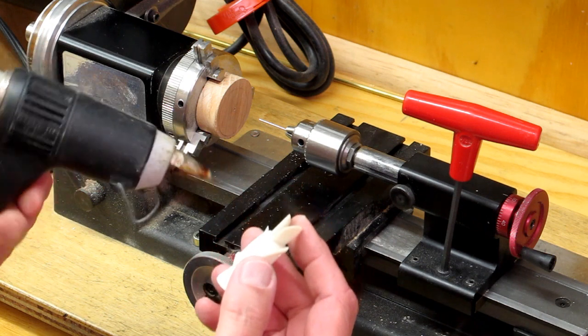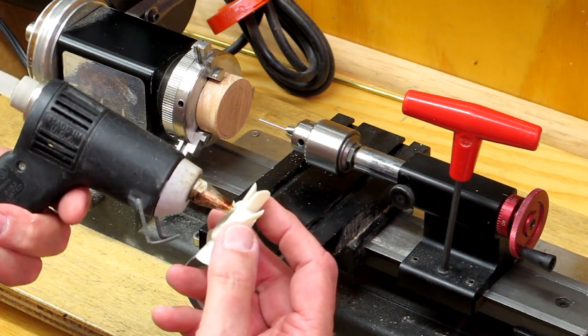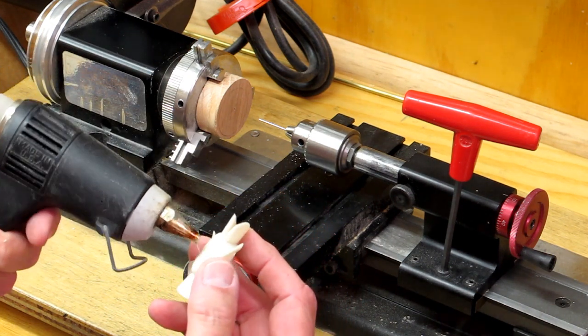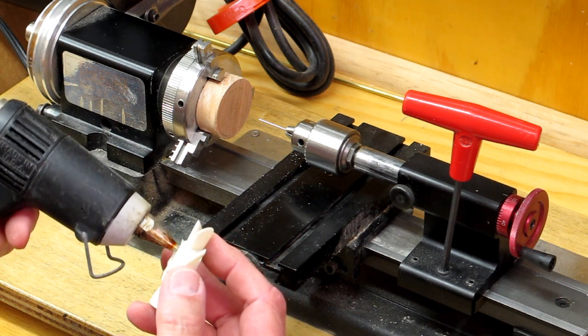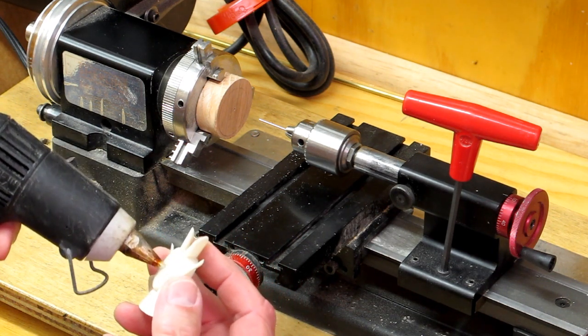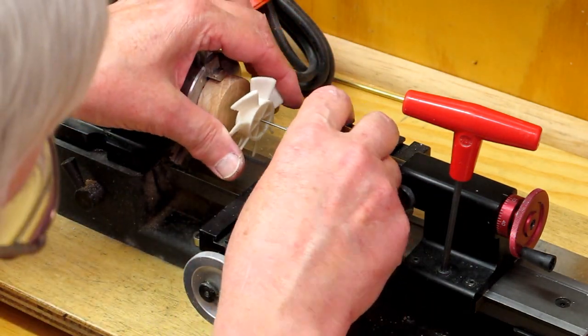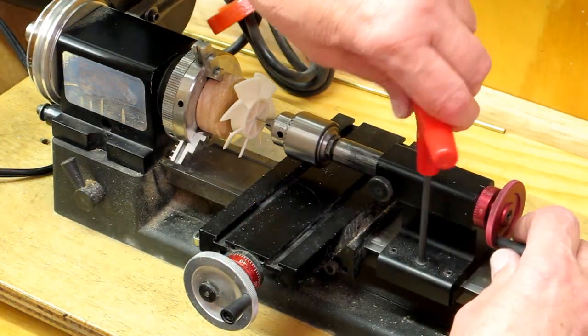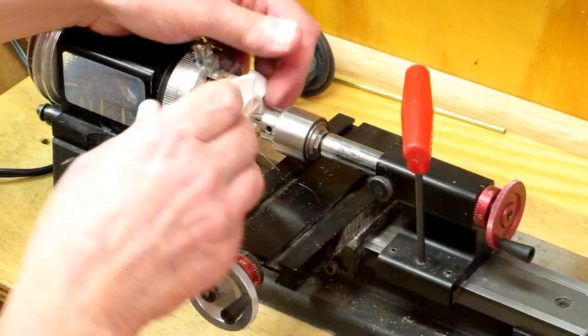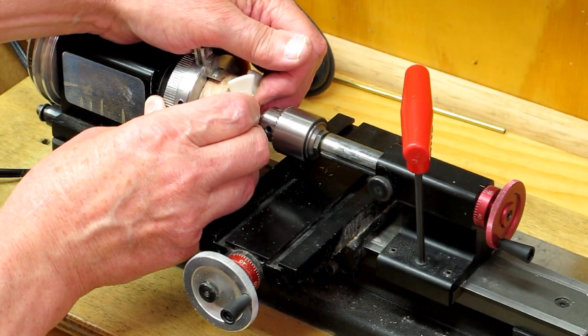Glue gun. Put some glue on the back of this thing. Quickly put it on there. Hold that until it sets up.